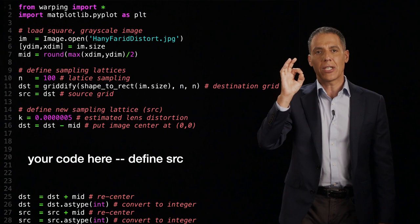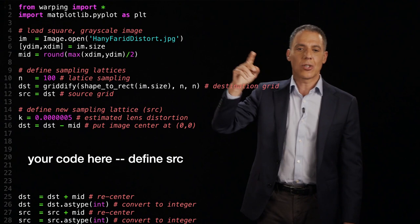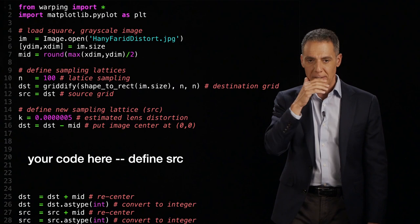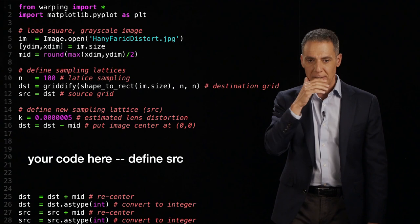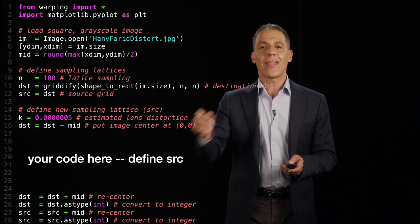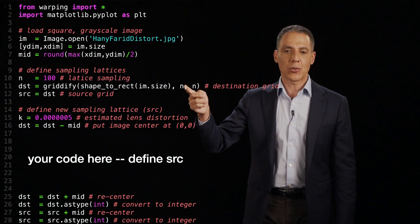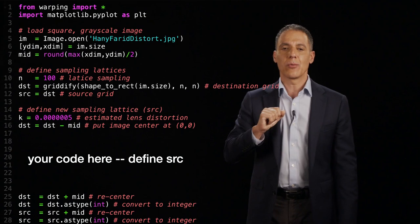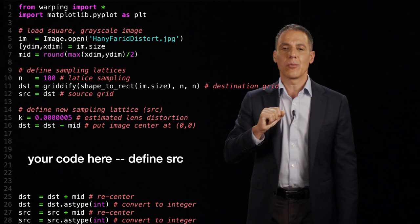First things first, I'm going to import an image of me that has been distorted. I'm going to grab the image size and find the middle of the image. And the reason I need the middle of the image is, remember, I'm going to compute the distance of every pixel relative to the center of the image. So I'm going to compute the midpoint right here of the maximum X and Y dimensions. Now I'm going to create a sampling lattice of the points in the distorted image, and then I'm going to create a new sampling lattice of the points in the undistorted image. And then I'm going to warp between those.